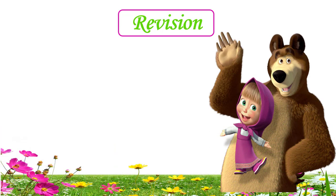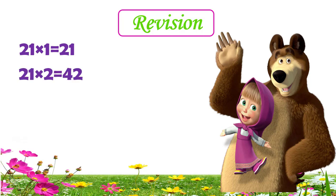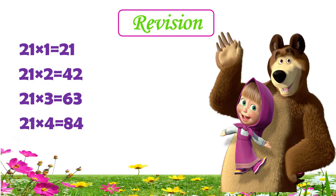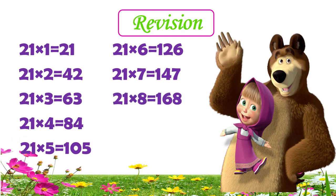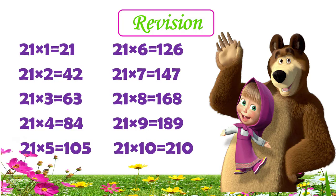Now children, let's quickly revise the table of 21. 21 1s are 21, 21 2s are 42, 21 3s are 63, 21 4s are 84, 21 5s are 105, 21 6s are 126, 21 7s are 147, 21 8s are 168, 21 9s are 189, 21 10s are 210.